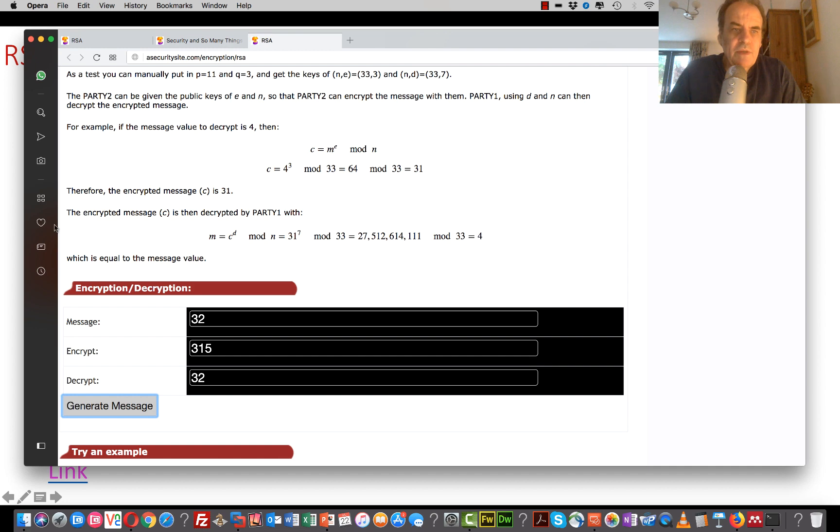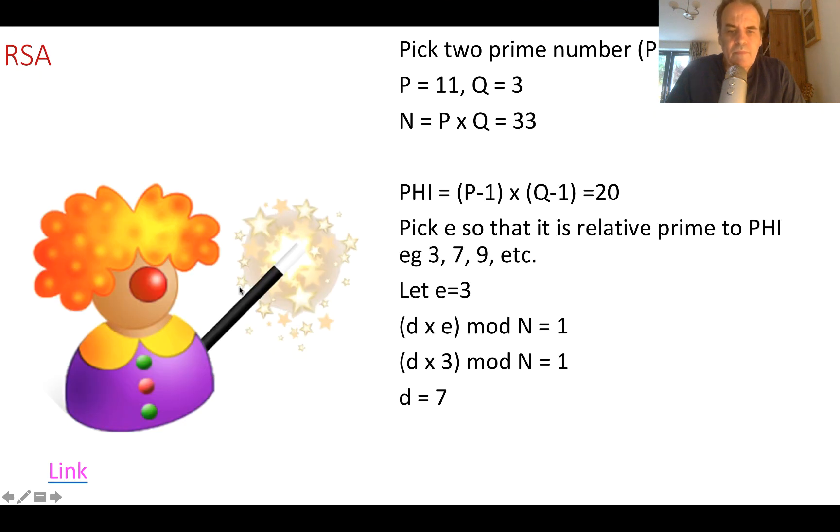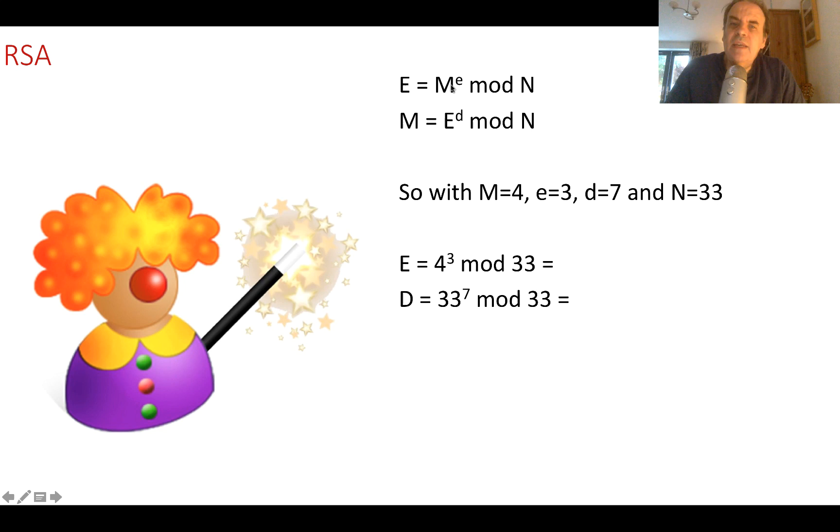Work out the D value. And then we can encrypt. So the encryption process to take our message, and we raise it to the power of our encrypting key, E, and we take mod N. And then to decrypt, we take the encrypted value, raise it to the power of D, and then take mod N, and we get our message back again.